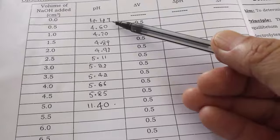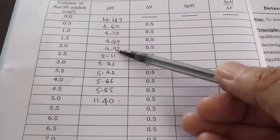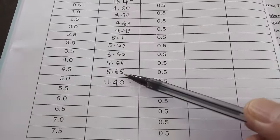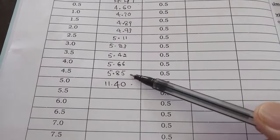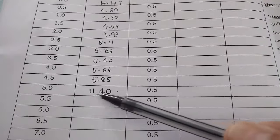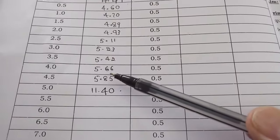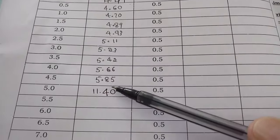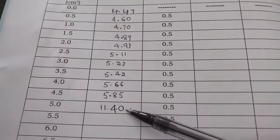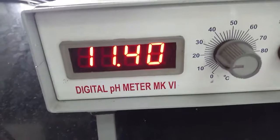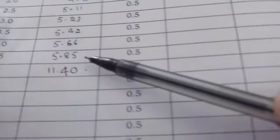So solution is neutralizing. After 4.5, between 4.5 to 5, the solution is completely neutralized, and at 5 ml the pH increased to 11.40. So between 4.5 and 5 ml, the given acetic acid is completely neutralized as per this pH value. Here you can see 11.40, this is at 5 ml addition of NaOH.